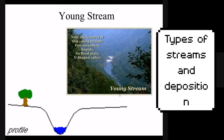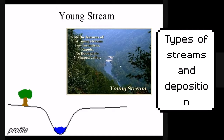Young streams have a V-shaped cross section. The streams do not have a wide flat floodplain — they have a single stream channel. In the upper image you can also see white water rapids are present in this young stream. This is a V-shaped valley and there is no floodplain present.